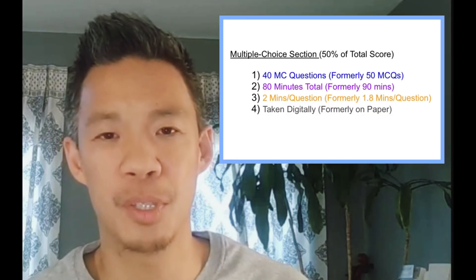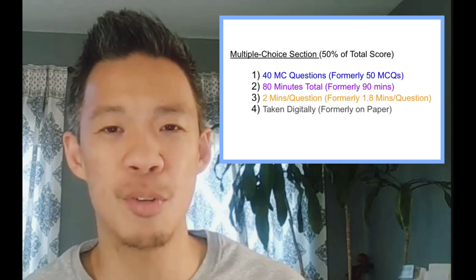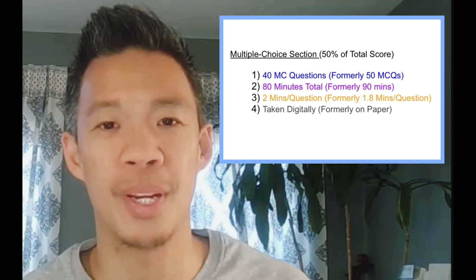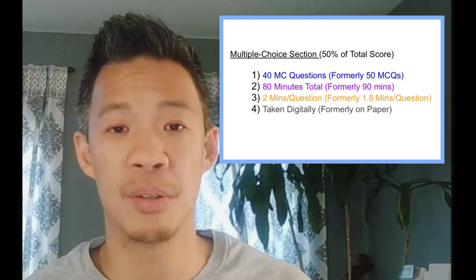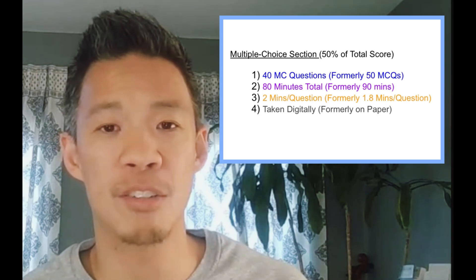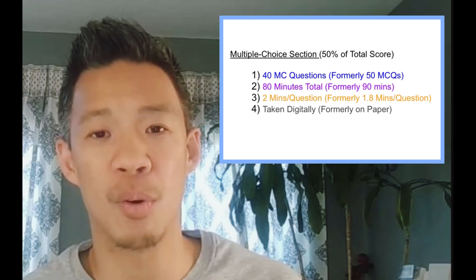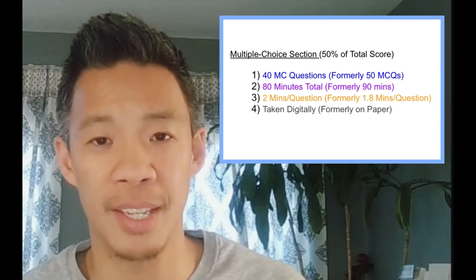Now, as I mentioned before, the multiple choice section has gone from 50 to 40 questions. So you're going to have two minutes per question as opposed to 1.8 minutes per question. So that amount of time does definitely add up and help you out. Every single question just has a single correct answer. None of the multi-select questions anymore. And all the questions are going to be taken electronically on your computer.